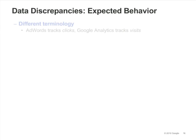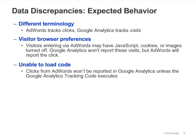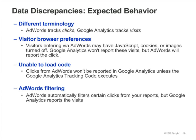You may notice differences between the data in your Google Analytics and AdWords reports. There are several reasons for these differences. First, AdWords tracks clicks while Analytics tracks visits. Second, some visitors who click on your AdWords ads may have JavaScript, cookies, or images turned off. As a result, Analytics won't report these visits, but AdWords will report the click. You'll also see differences if the Google Analytics tracking code on your landing page doesn't execute — in that case, AdWords will report the click but Analytics will not record the visit. Invalid clicks may also cause reporting differences, because while Google AdWords automatically filters invalid clicks from your reports, Google Analytics will still report the visits.